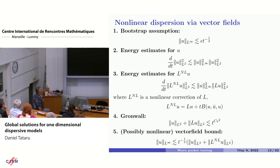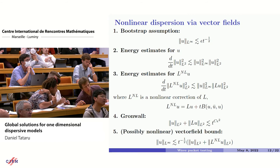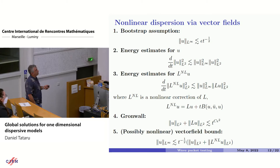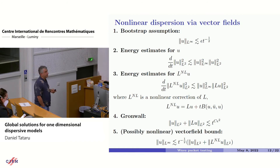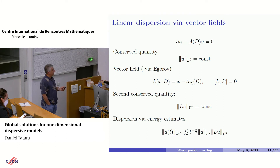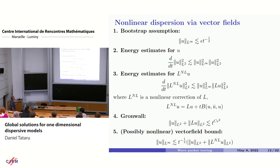If you want to get a global solution, you do a bootstrap argument: start with the decay you want as a bootstrap assumption with a large constant in front, then recover your bootstrap estimates in several steps. First, energy estimates for your solution U. The next step would be energy estimates for this L operator applied to U, except that doesn't work. The fix is to replace your operator L by a nonlinear normal form correction: your linear L plus a cubic perturbation. This cubic perturbation is nice except it has a T factor in front which is large.